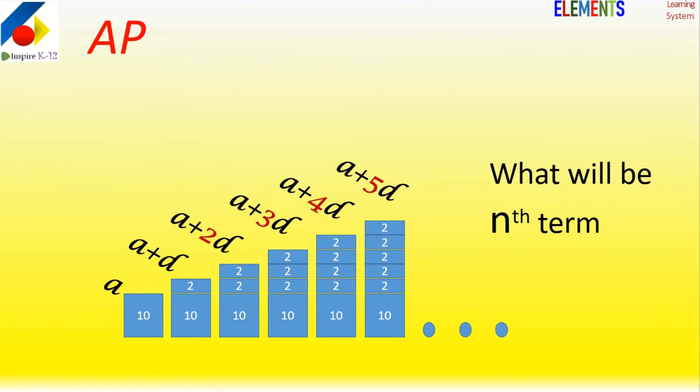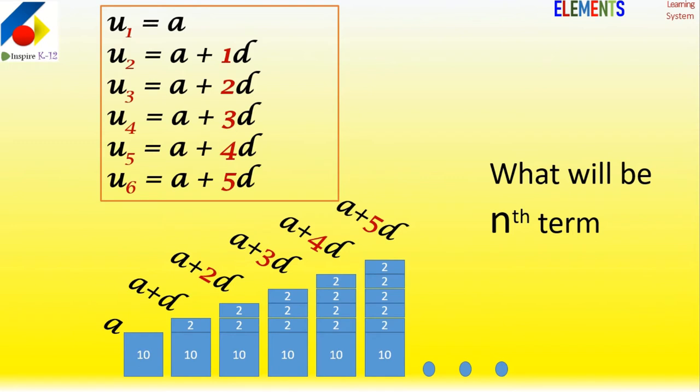Now if we write it directly: the first term is a, the second term is a plus one time the difference, the third term follows this pattern where the multiplier of the difference is one less than the term number.